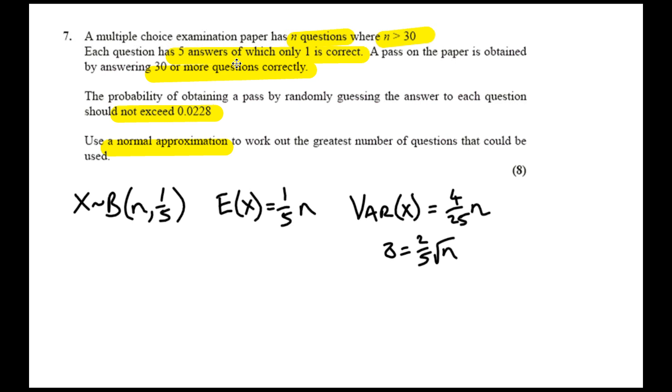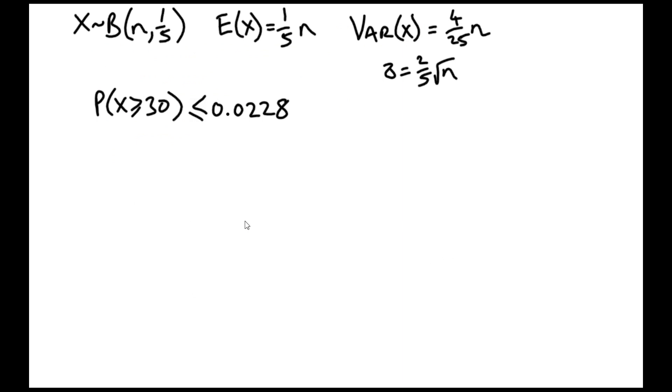We were told a pass on the paper is obtained by answering 30 or more questions correctly. Probability of answering 30 or more questions correctly - we want that to be smaller than or equal to 0.0228. This should be a nice starting point to put in place that normal approximation. Let's state the normal distribution we'll be using. Y is going to follow a normal distribution of one-fifth n, with a standard deviation of two-fifths root n. We'll square that to make sure we're displaying the variance.